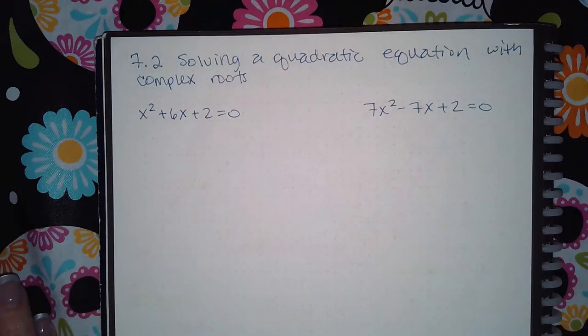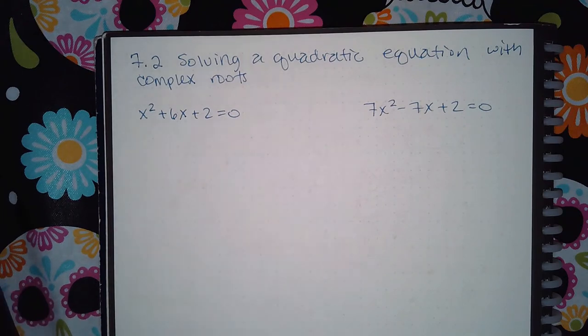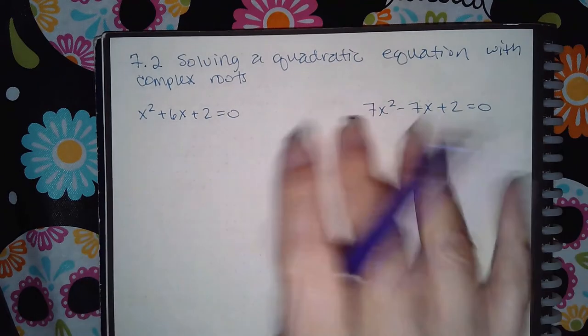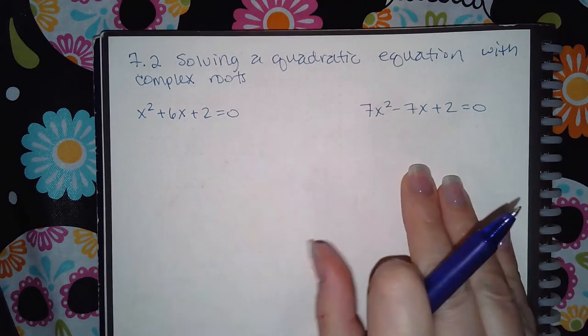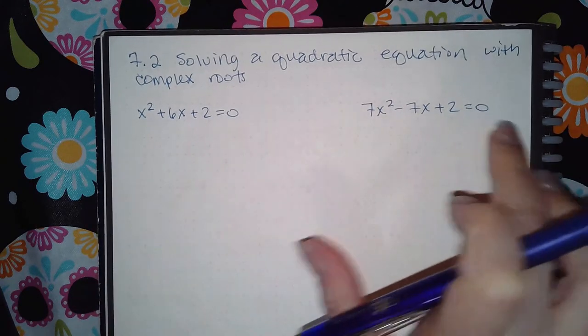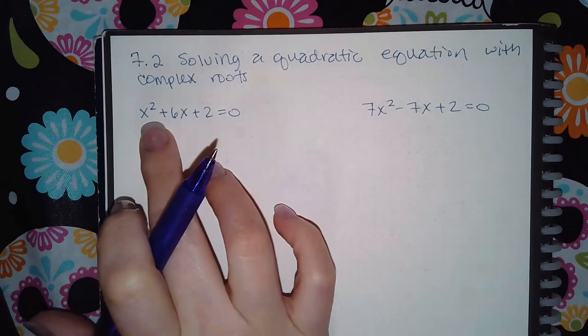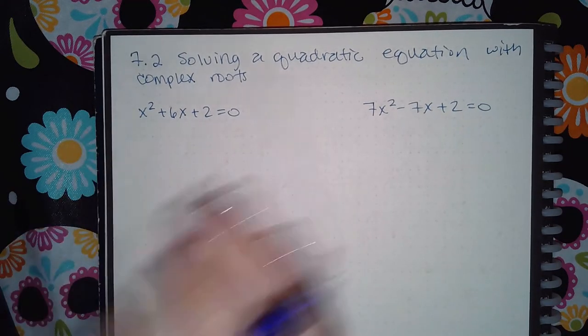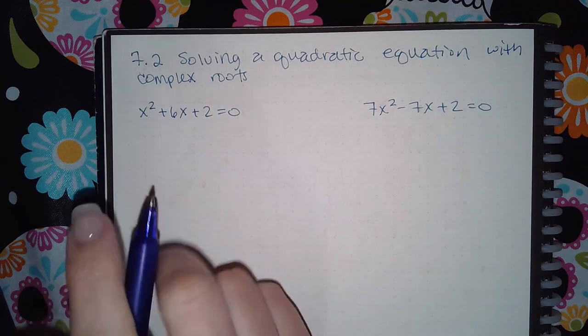Here we have 7.2 solving a quadratic equation with complex roots. So this is where we're going to start getting those imaginaries with the quadratic formula. Both of these are already set up to use the quadratic formula because they are equal to zero and the x squared terms are positive. That's the way we like them to look before we start plugging them into the quadratic formula.